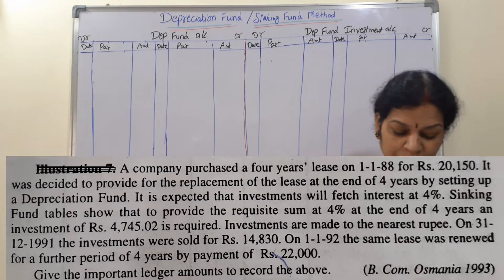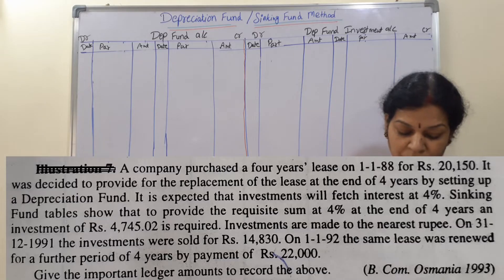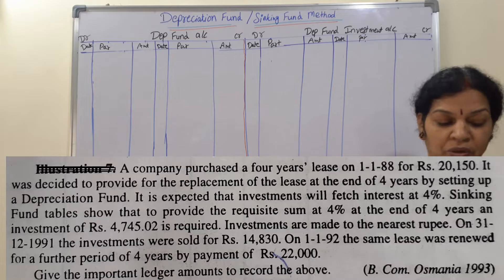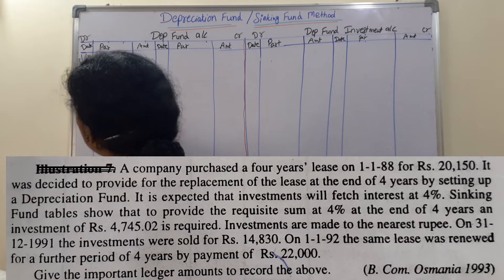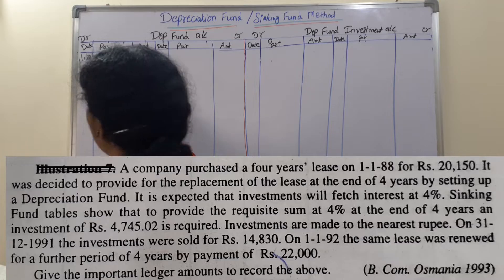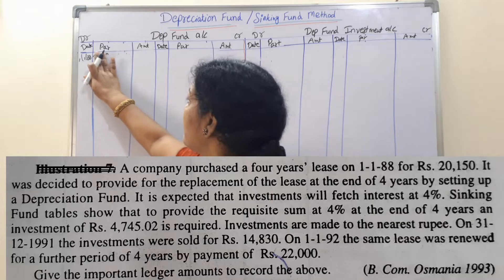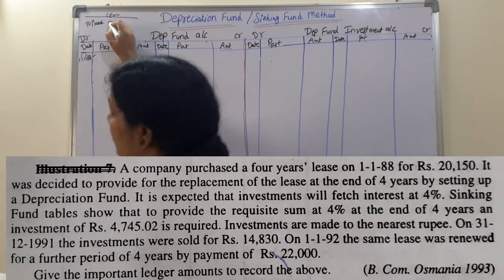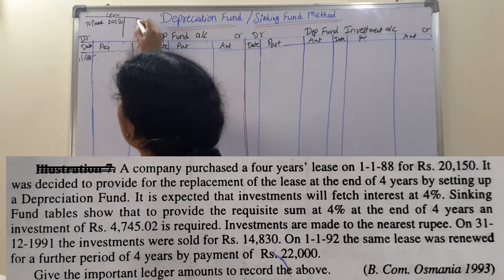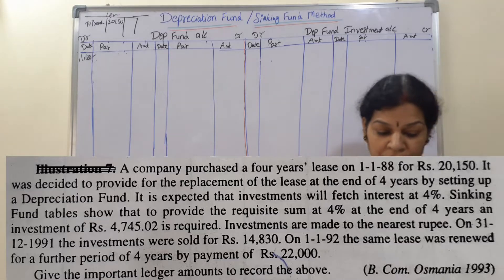The problem: a company purchased a four-year lease on 1/1/88 for 20,150. When you are purchasing a lease, you have to write in the lease account - to bank - how much it is: 20,150. Remember that the lease amount is 20,150.